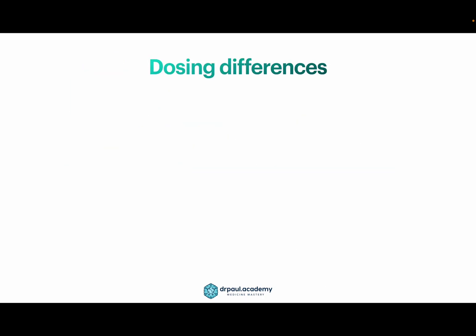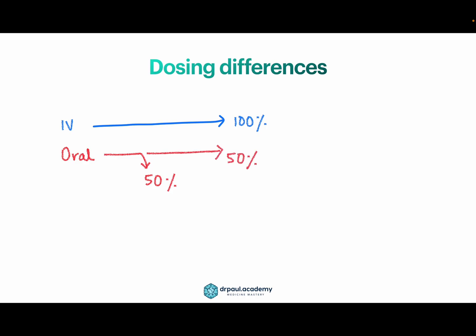First pass metabolism can result in dosing differences. For example, if you give a drug IV, 100% of it reaches the systemic circulation. But if you give the same dose orally and 50% gets metabolized by the liver before reaching the systemic circulation, then only 50% reaches the systemic circulation — so the oral bioavailability is 50%. To achieve the same effect as IV, you would have to double the oral dose.